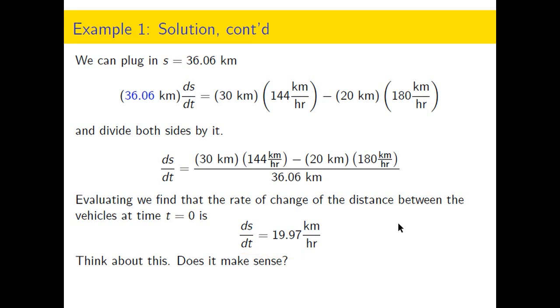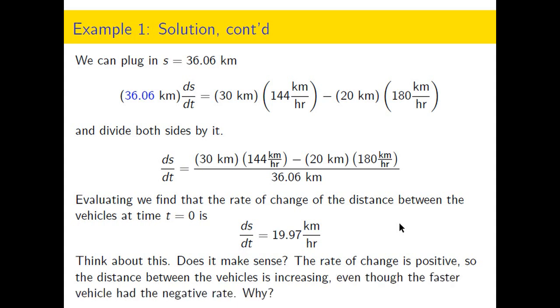This rate of change is positive. That means S is increasing. The distance between the vehicles is increasing, even though the police cruiser is the faster vehicle. Does that make sense?